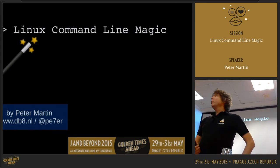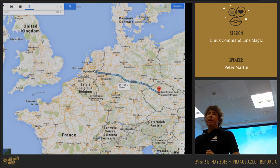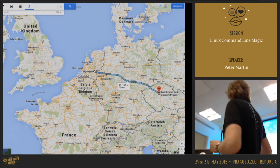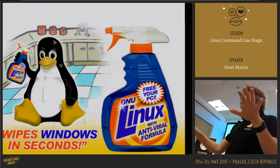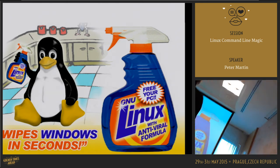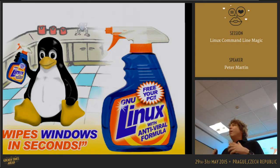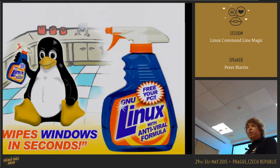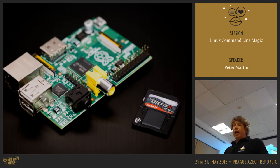Hello everyone, welcome to this presentation about Linux command line magic. I'm Peter Martin, I'm from the Netherlands — about 150 hours walk from here. I don't really like Windows. I switched in 2007 from Windows XP to Ubuntu Linux and currently I'm using Debian Linux. This is my favorite machine — a Raspberry Pi.